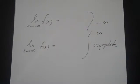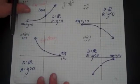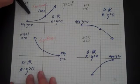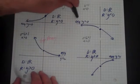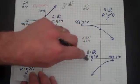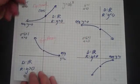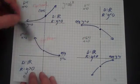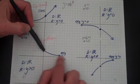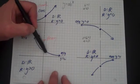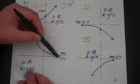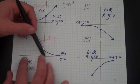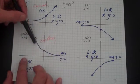We need to remember what our four graphs look like: exponential growth, exponential decay, exponential growth flipped, and exponential decay flipped. On any one of these — for example, exponential decay — as x goes to positive infinity, y gets closer and closer to the asymptote. And as x goes to negative infinity, y goes to positive infinity.